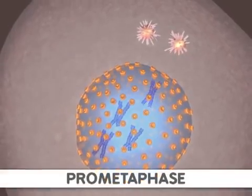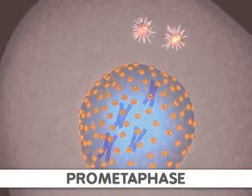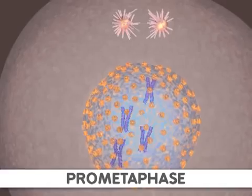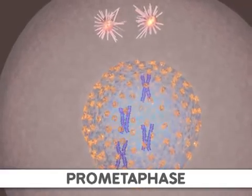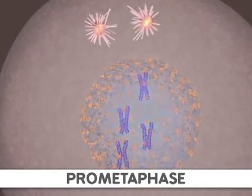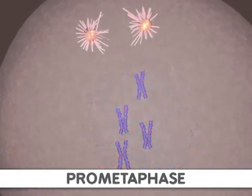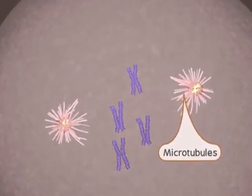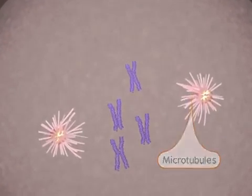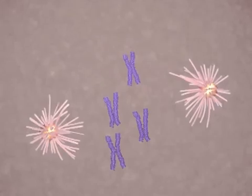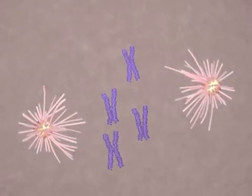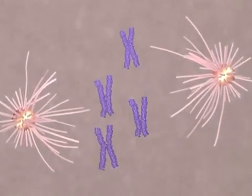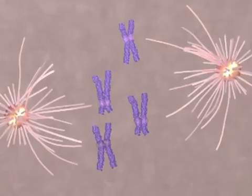Next, prometaphase begins when the nuclear membrane is broken down. At the same time, microtubule strands, or spindle fibers, are growing from the centrosomes. These strands attach to a protein structure called the kinetochore. One kinetochore is attached to the centromere of each sister chromatid.